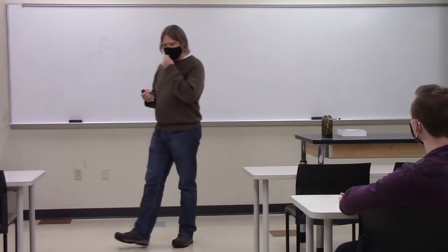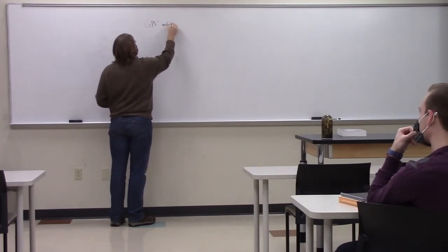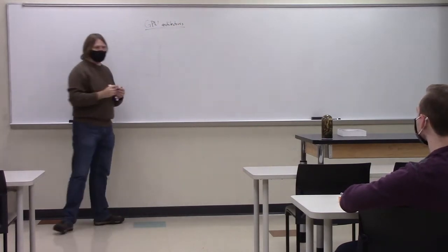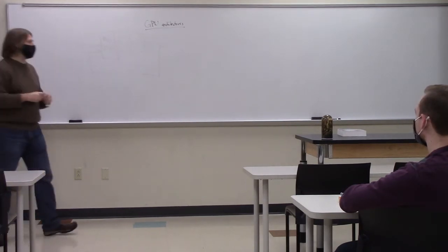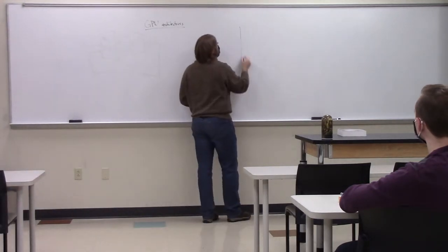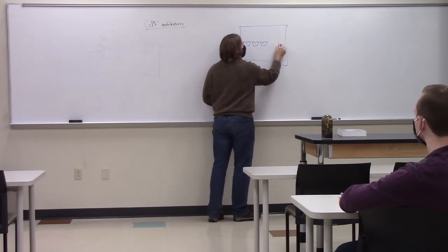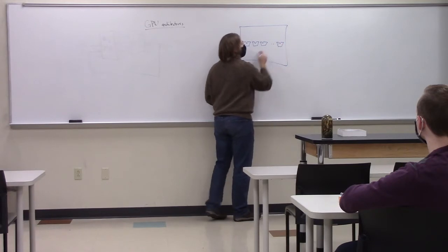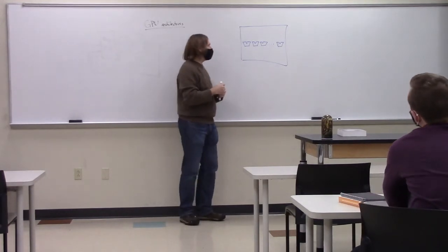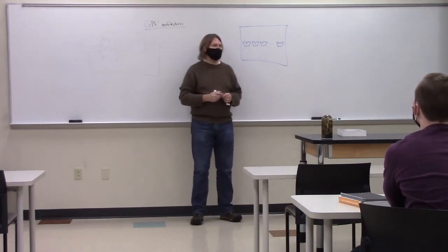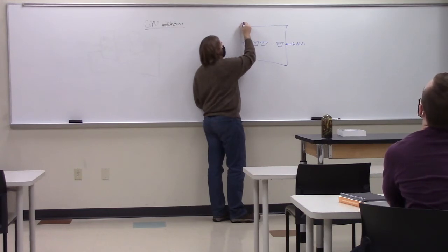All right, so Wednesday we were talking about GPUs, right? And we said these are kind of like a SIMD architecture because we've got these cores that look kind of like this, where we've got some core and we've got a very wide number of ALUs. And so when we set a bunch of instructions, all of these ALUs can be executing at the same time. We said typically that here there are 16 ALUs in a single GPU core.